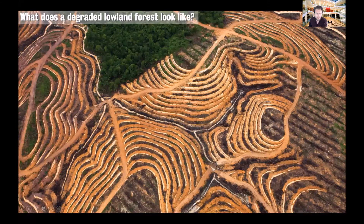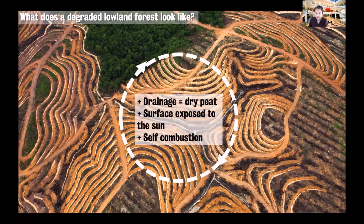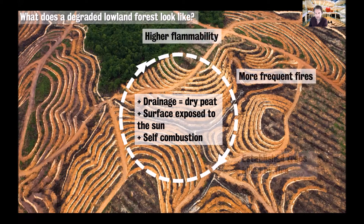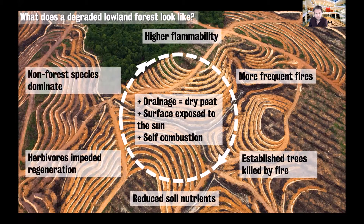Once humans bring deforestation and drainage to these environments, clearing the forest canopy and lowering the water table, all of those mechanisms that prevent fires disintegrate and the landscape becomes more susceptible to fire. The effects are particularly bad in areas with peat soil. Peat stores huge amounts of carbon and when it's dry it can smoulder and burn, producing particularly toxic smoke.